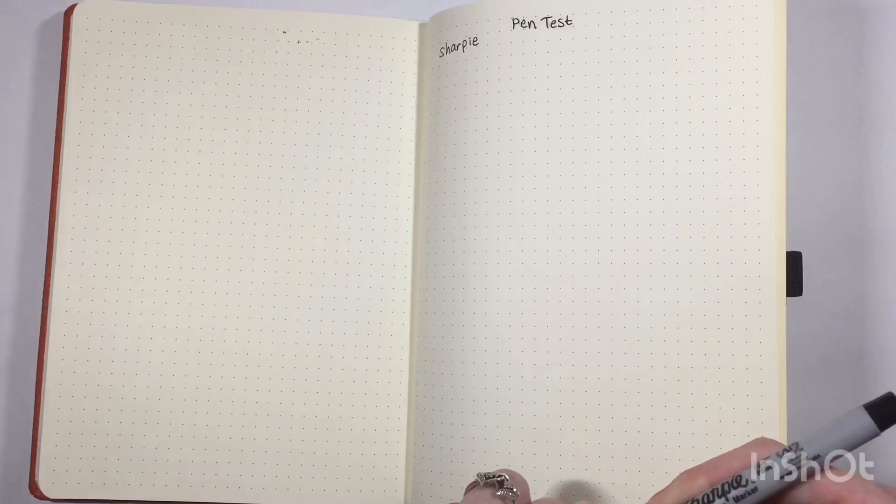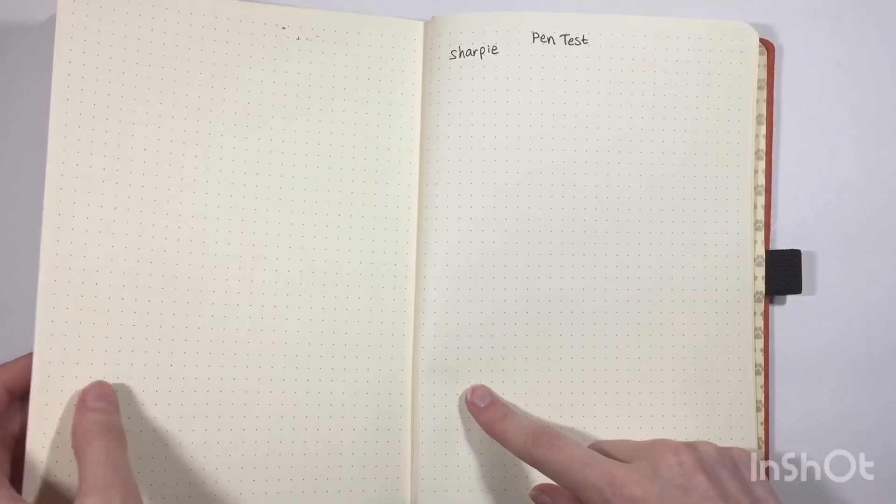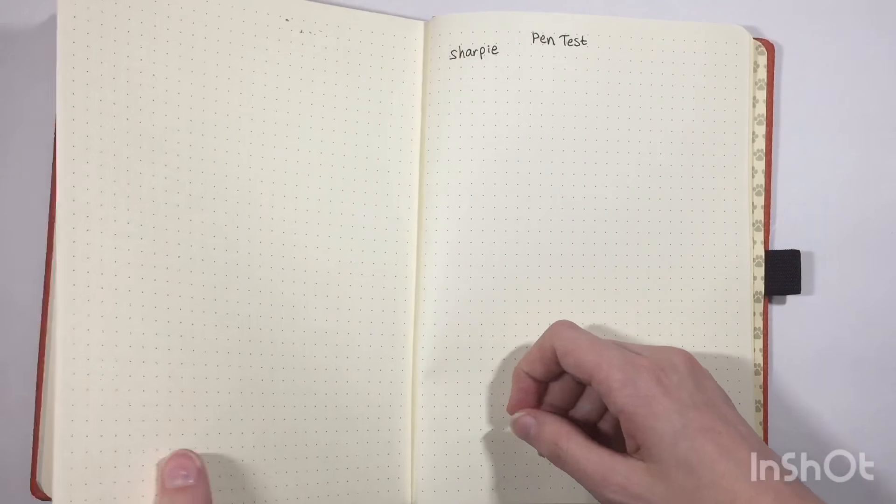Sharpie actually didn't bleed that much through this. I think this is 100 GSM, which I'm not sure what that stands for, but I know that means good quality, so that's good. Overall, I think I'll definitely be able to deal with the cream color instead of it being white.